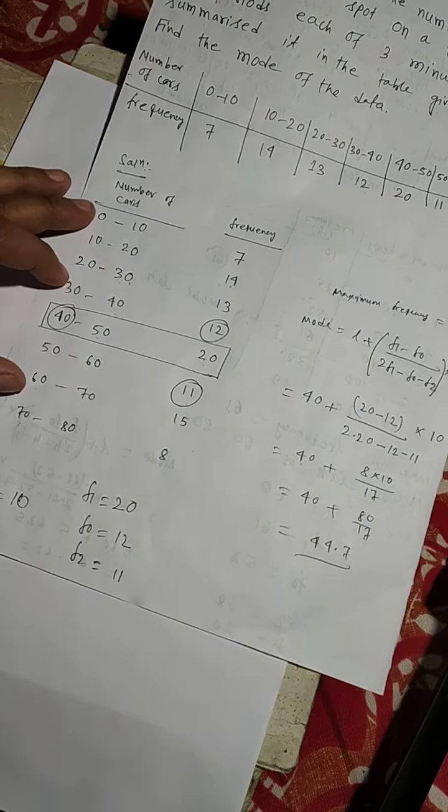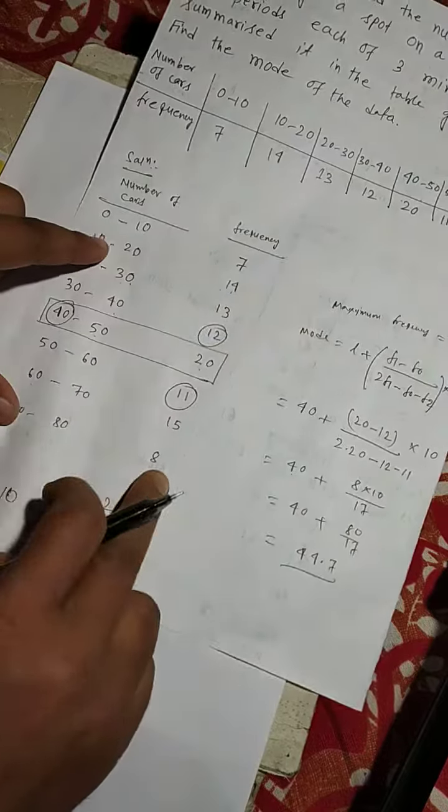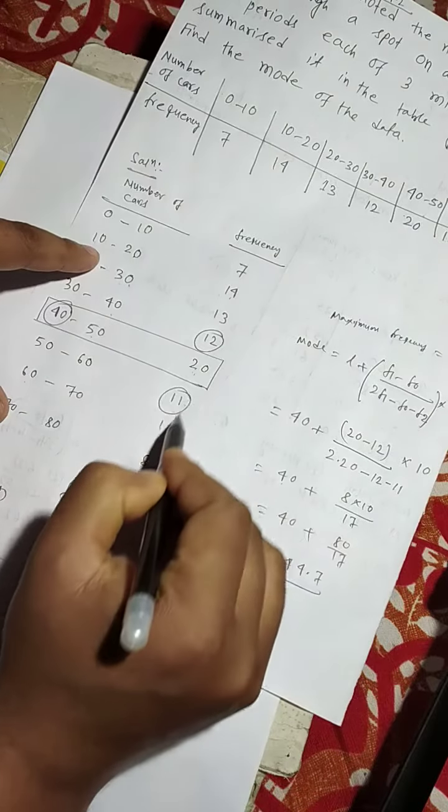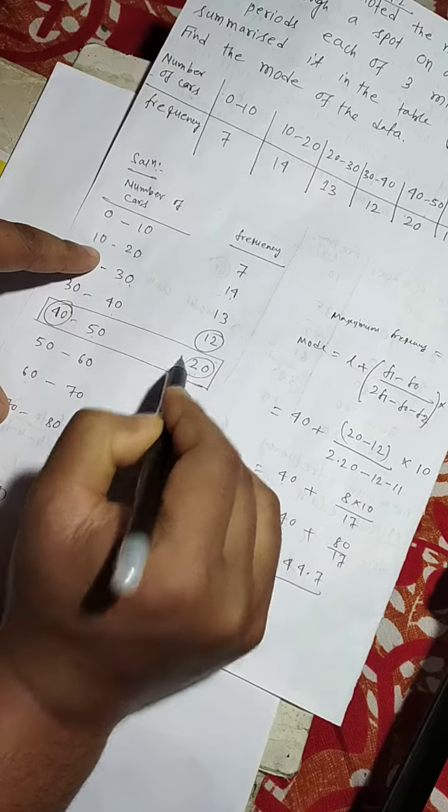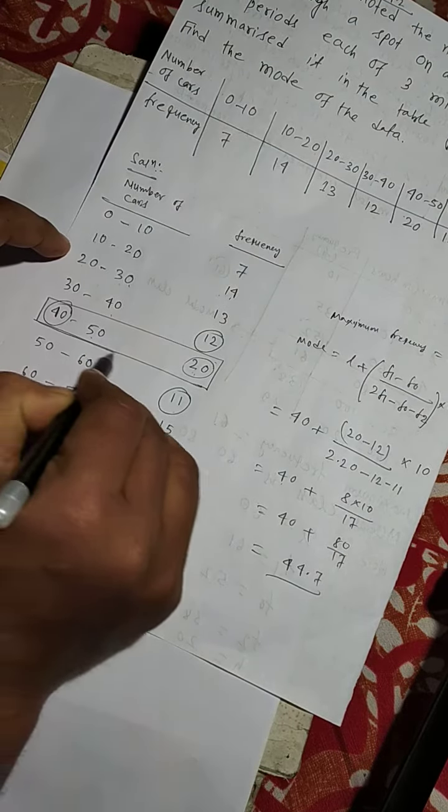So, here at first we have to choose maximum frequency of this column, so here maximum frequency is 20. So, this is the modal class.